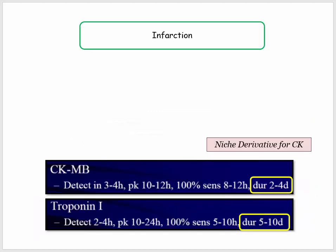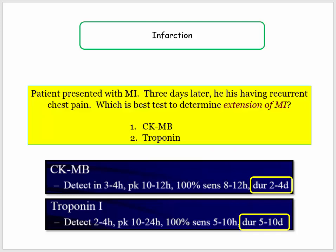The other fun derivative is the duration of elevation. Troponin can remain elevated for several days compared with CK. So how will they come after you with this? Patient presents with MI; three days later he is having recurrent chest pain. What is the best biomarker to determine extension of MI? Answer: CK. The CK value declines more rapidly following the initial elevation — a sneaky little question on biomarkers, but now you know.